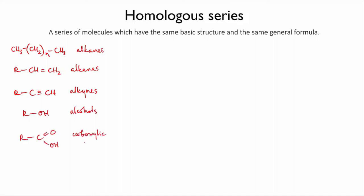The members of each of these groups have the same basic structure and their formulae follow a pattern. For instance, the general formula for an alkane is CnH2n plus 2.